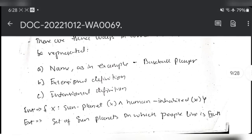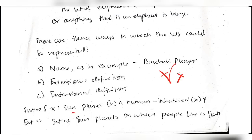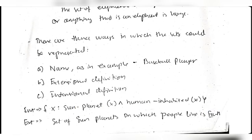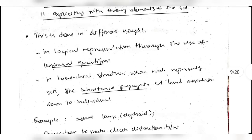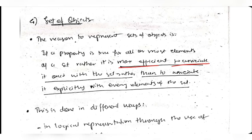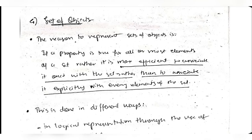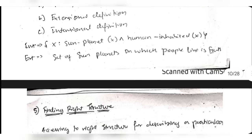For example, using ∀x where x belongs to sun_planet, if you are human and living on a sun_planet, that means you are living on Earth since no other planet has humans. All the set of objects 'humans on sun_planet' is contracted into one small sentence. Instead of associating with every individual element, we take the whole set and define it as one - that is what set of objects means.